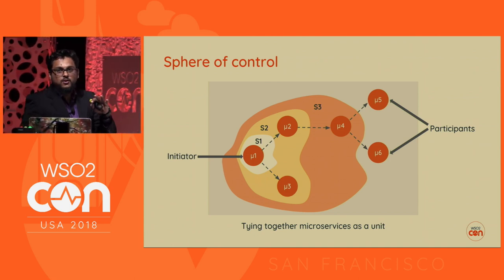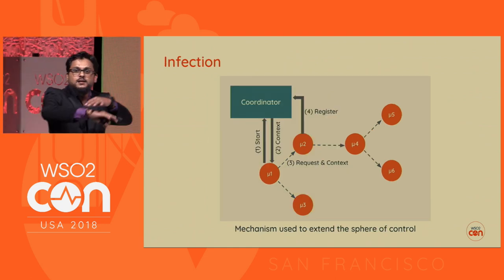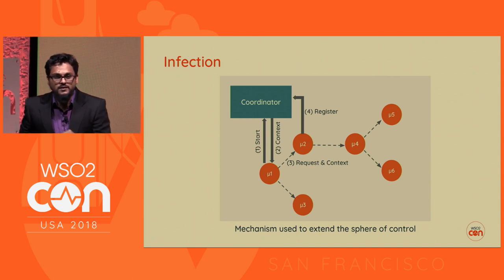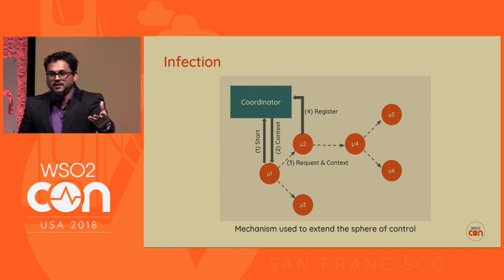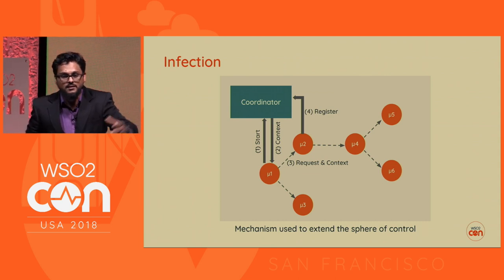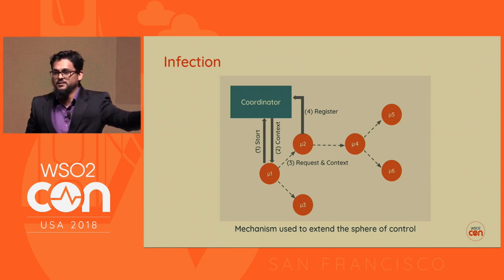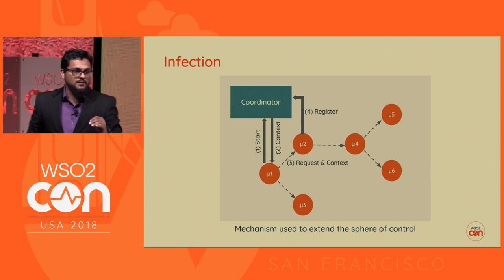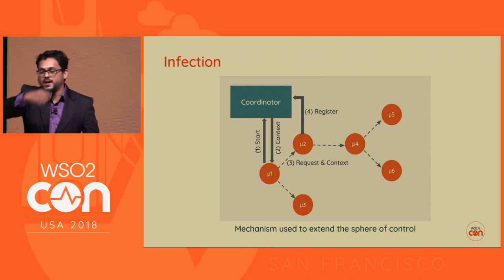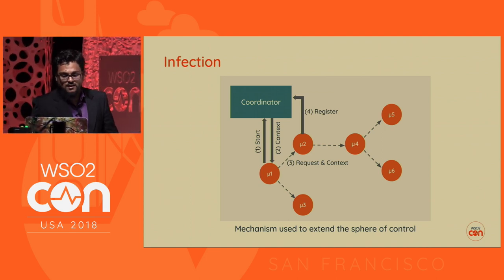We tie together these microservices as a unit. This process of tying them together is known as infection. When one microservice talks to another, the second microservice gets infected. When that second microservice talks to another, the third also gets infected — with the same transaction context. Each global transaction has a unique transaction ID, and this ID is passed on to the other microservices. This process is known as infection.